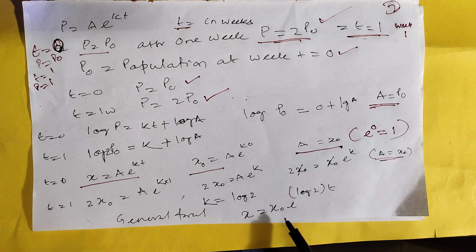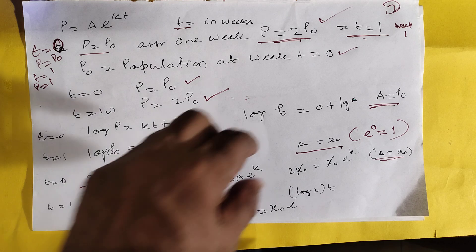X is equal to X0 times e to the power log 2 times T. This is the general formula now.